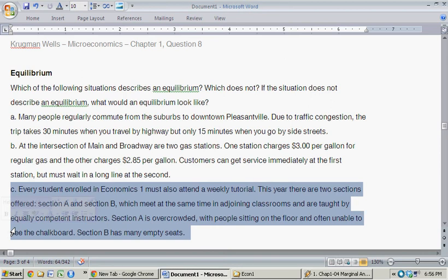So I'm assuming here both sections are basically completely identical, otherwise equal. Section A is overcrowded with people sitting on the floor and often unable to see the chalkboard, while section B has empty seats.